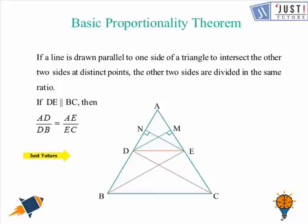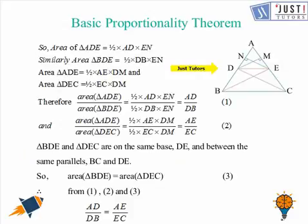Now let's see how we can prove that. We have the same triangle here. So we will start working with triangle ADE. Area of triangle ADE will be equal to half base into height, where base is AD and height is EN. So area is half multiplied by AD multiplied by EN.